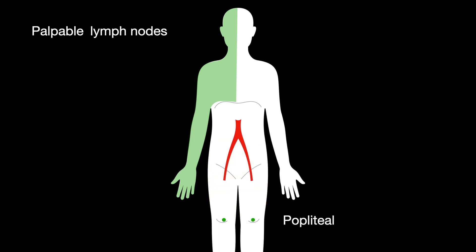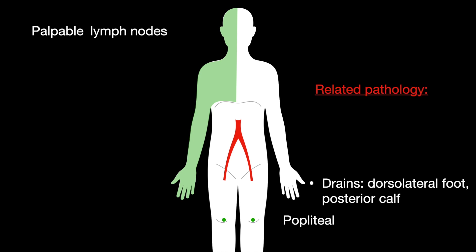The popliteal lymph nodes drain the dorsolateral foot and the posterior calf. Related pathology includes lateral foot and leg cellulitis.